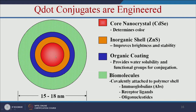To make quantum dots biocompatible and soluble, we have to engineer them. The core nanocrystal determines the color. An inorganic shell improves brightness and stability. An organic coating provides water solubility and functional groups for conjugation — so we can add antibodies or peptides and specifically target these quantum dots for cancer diagnosis.